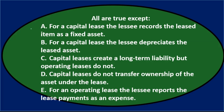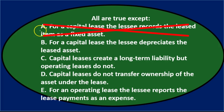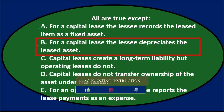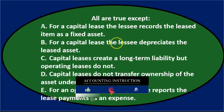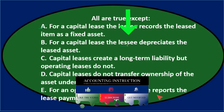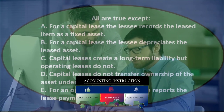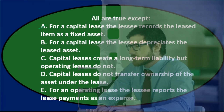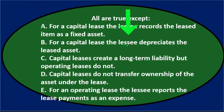Option A: for a capital lease the leasee records the lease item as a fixed asset. If we think of a capital lease as buying it, then yes, we record it as a fixed asset on the balance sheet — so A is true, not the answer. Option B: the leasee depreciates the leased asset. The leasee pretty much bought it, put the asset on the books, and therefore has to depreciate it — so B is also true.